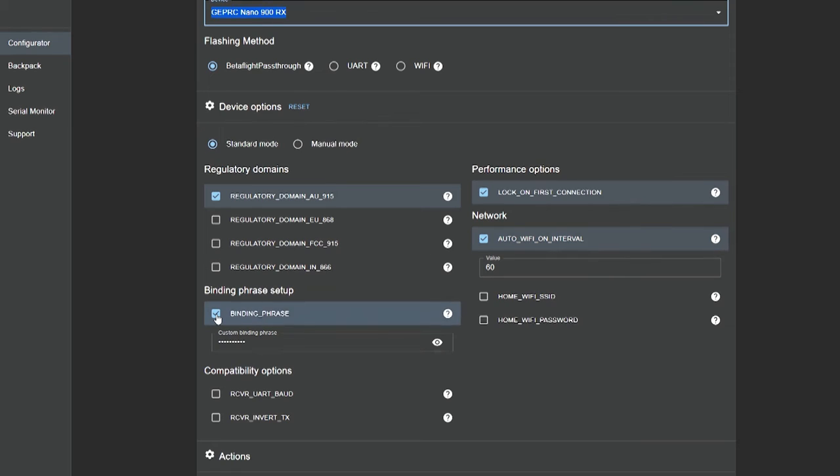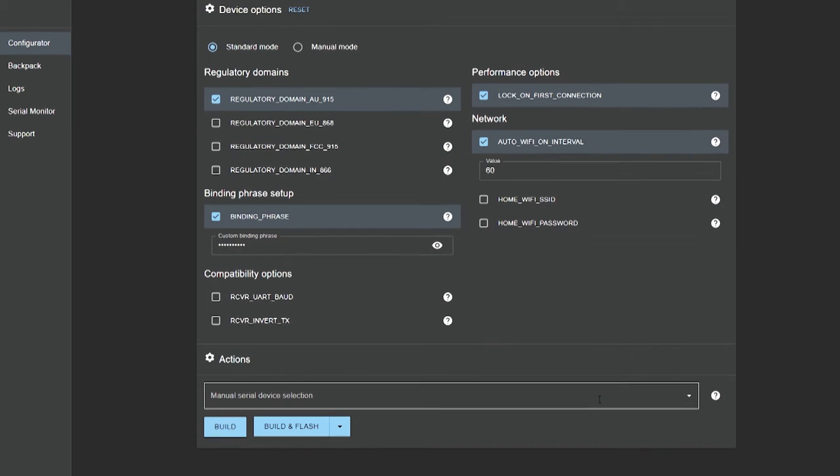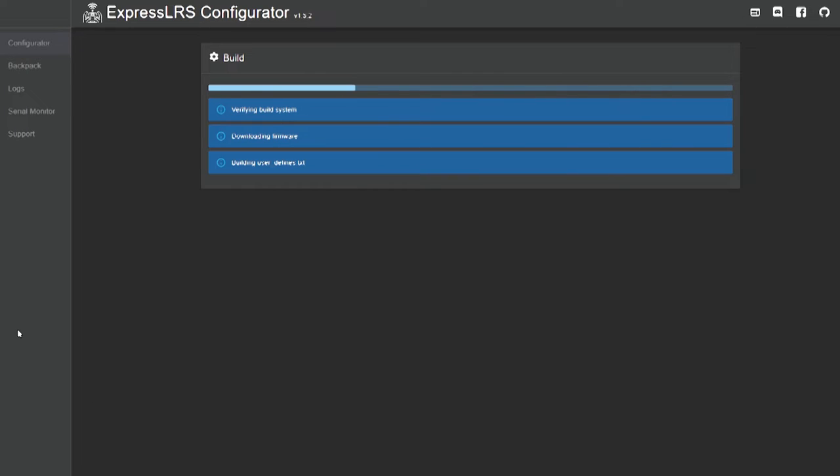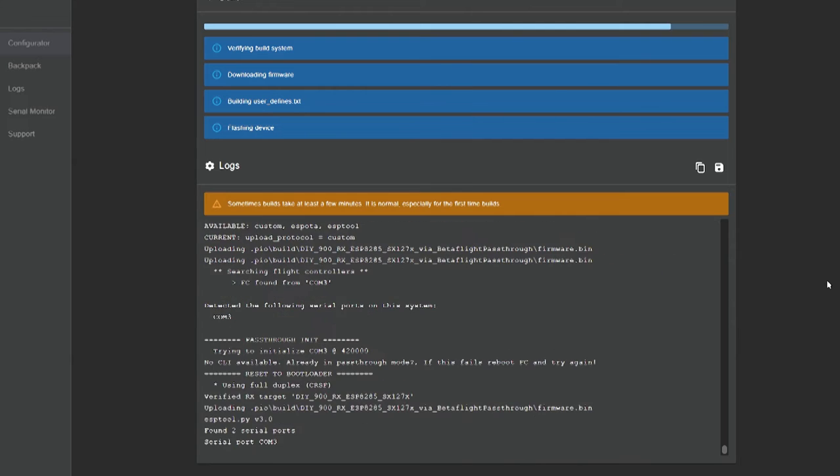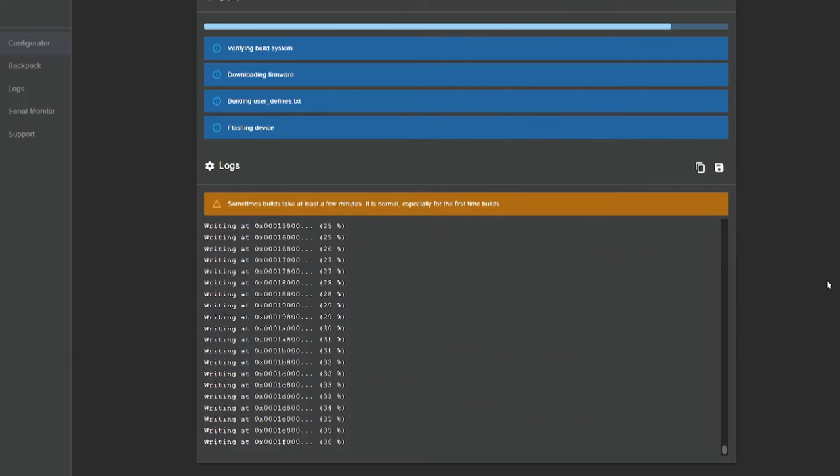Also check your binding phrase is correct and select build and flash at the bottom. Now this process can take a few minutes. But once finished you should see success in green at the bottom of the screen.